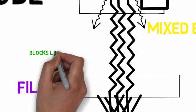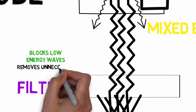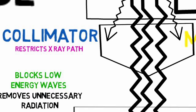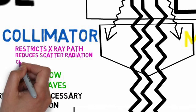This is a filter. This blocks the low energy waves and removes unnecessary radiation, that is radiation A. This is a collimator which restricts the X-ray path and reduces the scattered radiation, thus giving a direction to the X-ray beam.